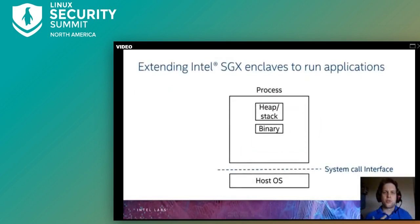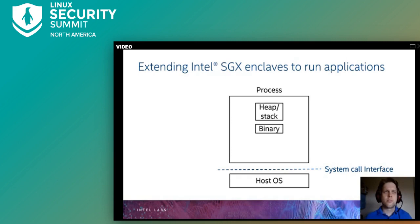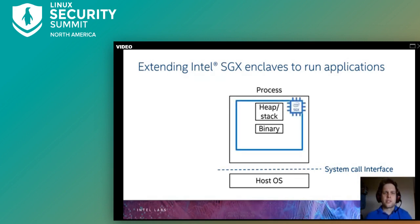Splitting the application into an untrusted component and a trusted enclave ensures a very small TCB and strong security guarantees, but it increases the effort to build and maintain such a split. In an untrusted cloud environment, we're using SGX not necessarily to split the application, but rather to shield against the cloud's system software from gaining access to our sensitive data. This results in a design where the entire application runs inside a trusted enclave, shielded against access from the system software.